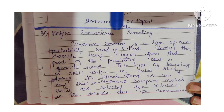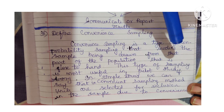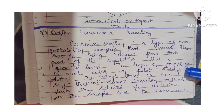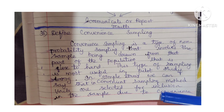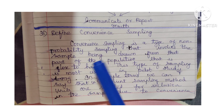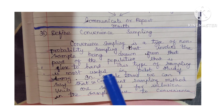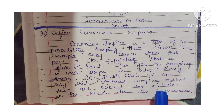Question 38: Define convenience sampling. Convenience sampling is a type of non-probability sampling that involves the sample being drawn from that part of the population that is close to hand. This type of sampling is most useful in pilot study testing. In simple terms, units are selected for inclusion in the sample due to convenience.